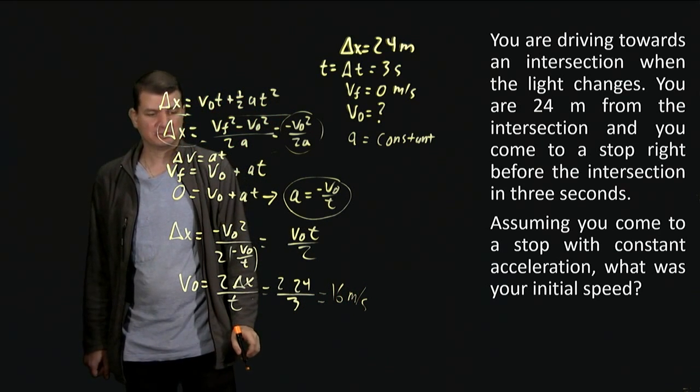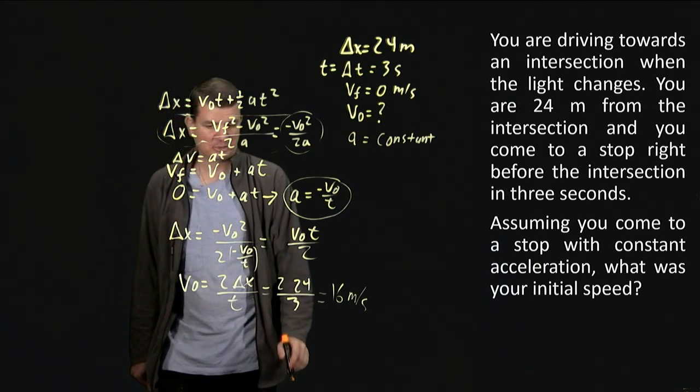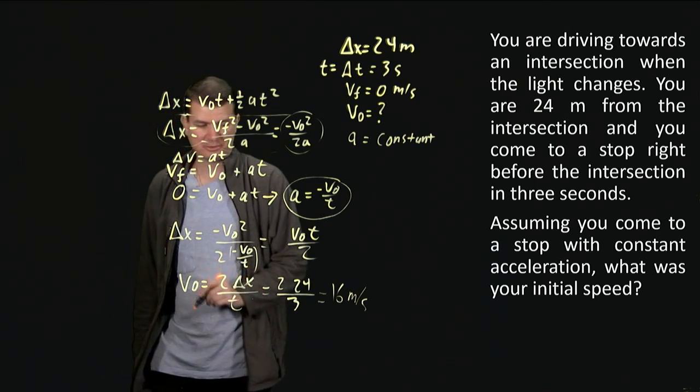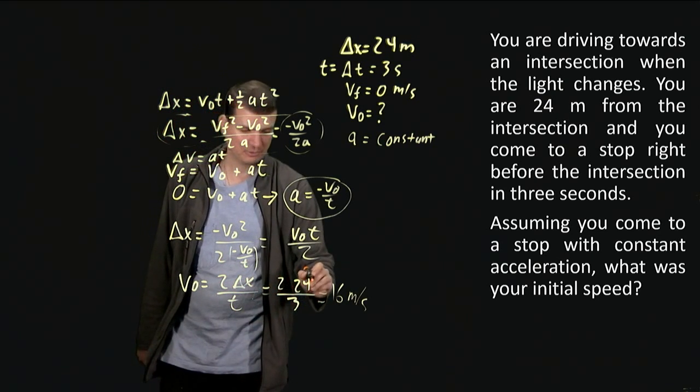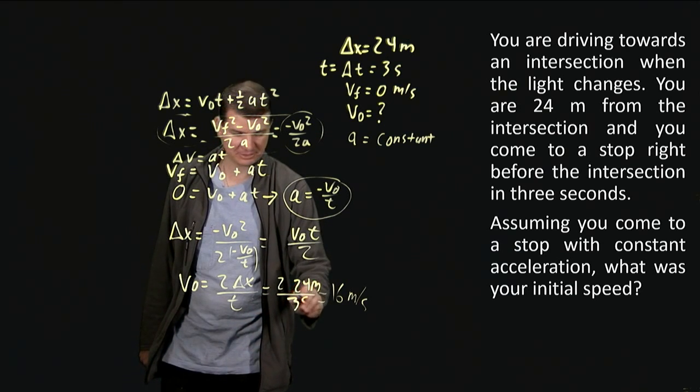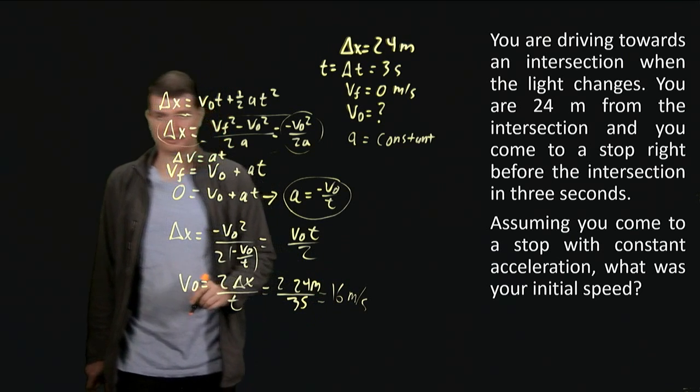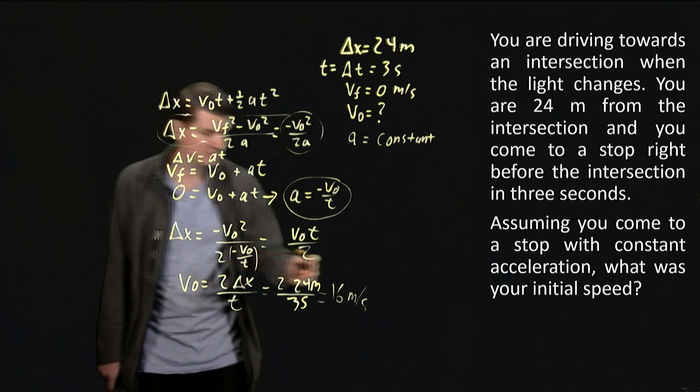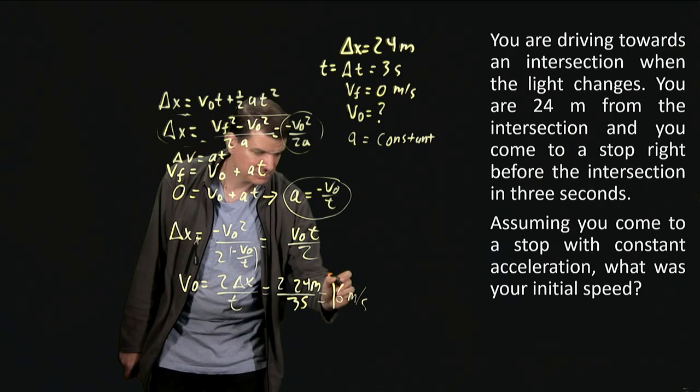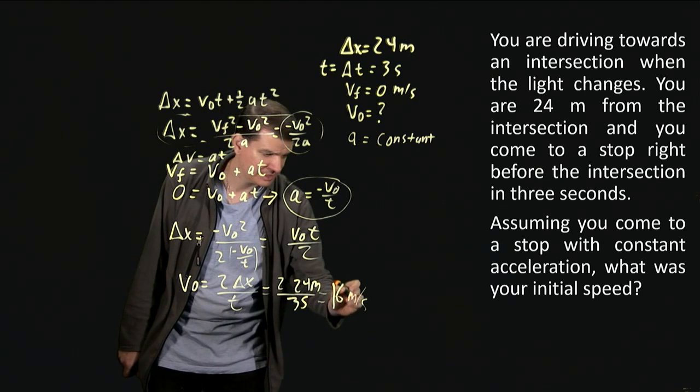And I can check that those units are right if I go back and think about all these. So that two is actually a two, the twenty four was twenty four meters, the three was three seconds, so indeed when I've plugged in those are the units that I get out and those are the units that I should have. So sixteen meters per second.